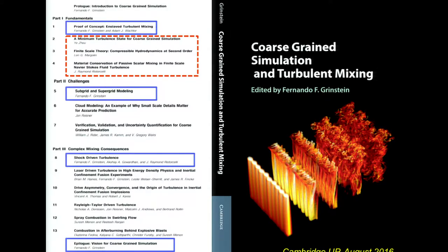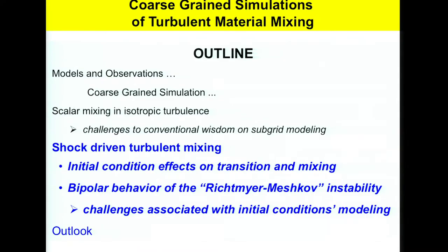There's a book that came out last year with a chapter by Yi Zhao on a minimum model for turbulence, a chapter by Len Margolin discussing finite-scale Navier-Stokes equations, and Ristorcelli trying to formalize turbulence analysis to understand the goods and bads of ILES and finite-scale Navier-Stokes. I'll refer you to the book for more details.